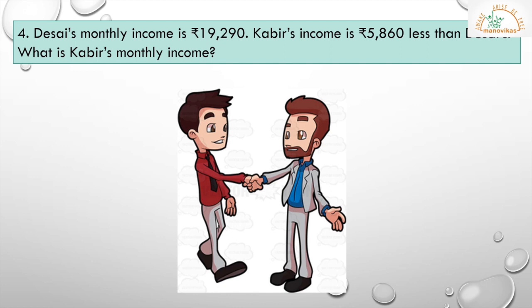Let's take the fourth problem. Their size monthly income is Rs. 19,290. Kabir's income is Rs. 5,860 less than their size. What is Kabir's monthly income? Their size monthly income is given to us, but Kabir's income is Rs. 5,860 less. We will have to find Kabir's monthly income by subtracting the two numbers.